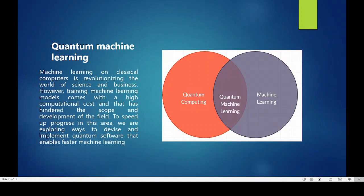Quantum machine learning. Machine learning on classical computers is revolutionizing the world of science and business. To speed up progress in this area, we are exploring ways to devise and implement quantum software that enables faster machine learning.